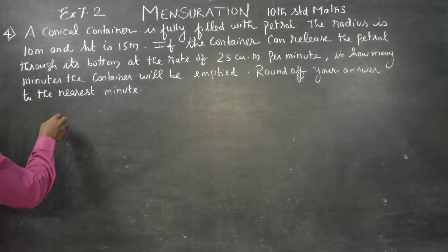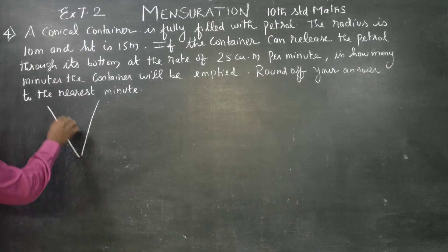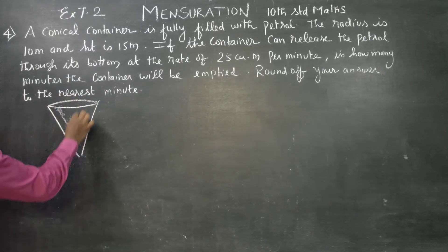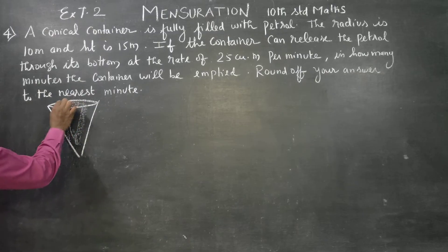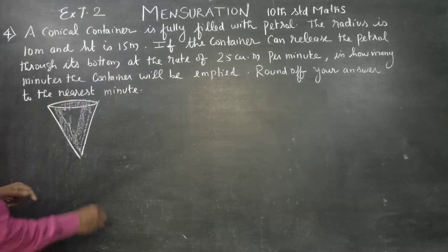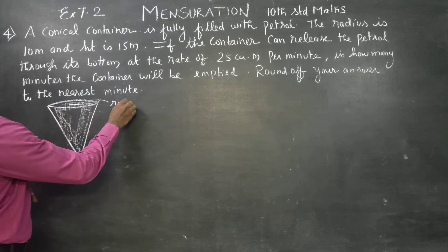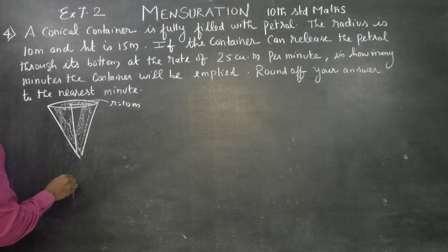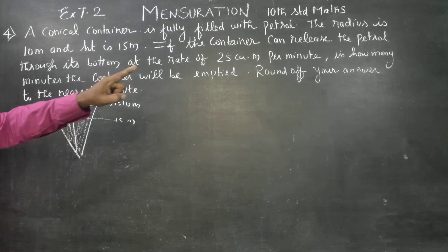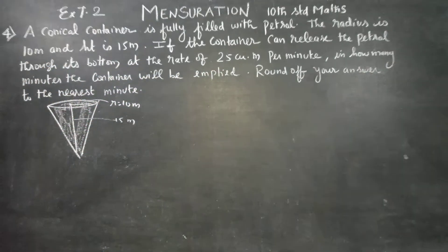One conical container is fully filled with petrol. The radius r is equal to 10 meters, height is equal to 15 meters. It is full of petrol. The container can release the petrol through its bottom at the rate of 25 cubic meters per minute.